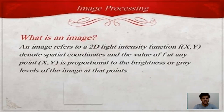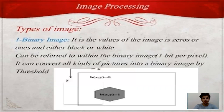Firstly, what is an image? An image refers to a 2D light intensity function f, which denotes spatial coordinates, and the value of f at any point is proportional to the brightness or gray levels of the image at that point.